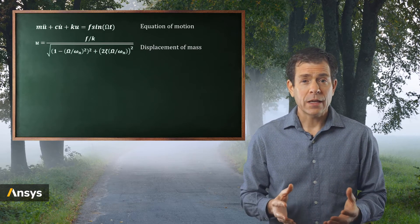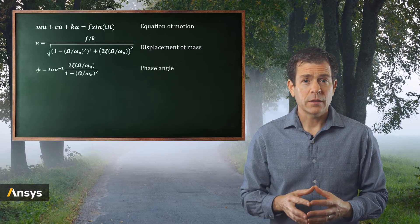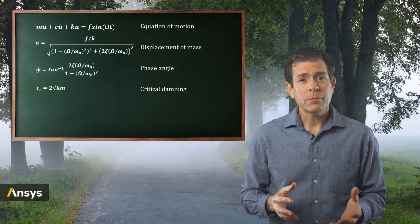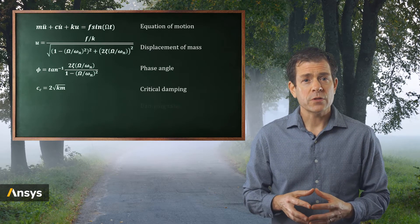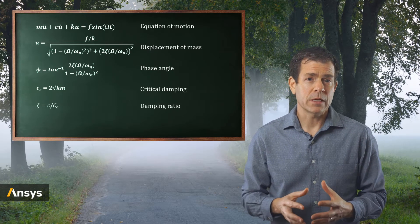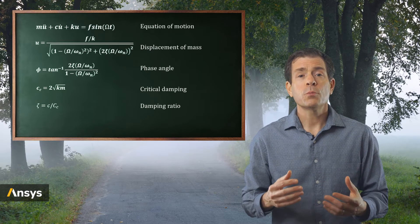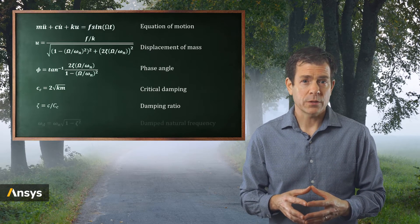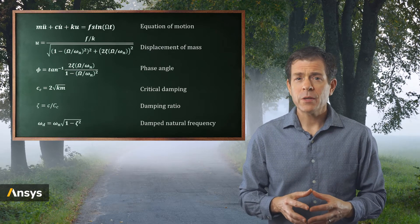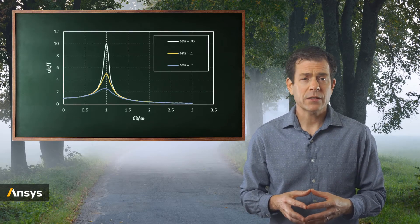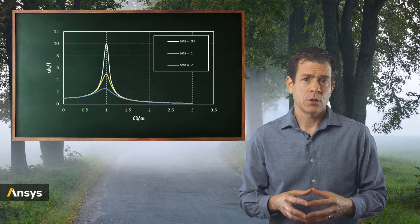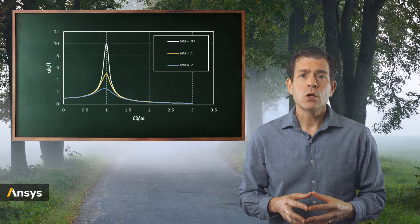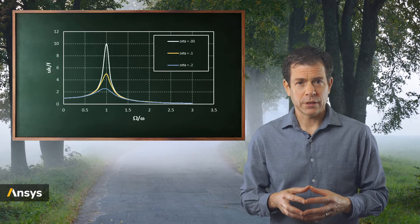We can also derive the phase angle phi and the critical damping. We will then compute the damping ratio for the supplied damping of the damper C. We also provide the damped natural frequency equation. Let's graph the displacement U and vary our imposed excitation frequency. We also vary the damping ratio on these graphs. We normalize the graph to make it simple and clear.